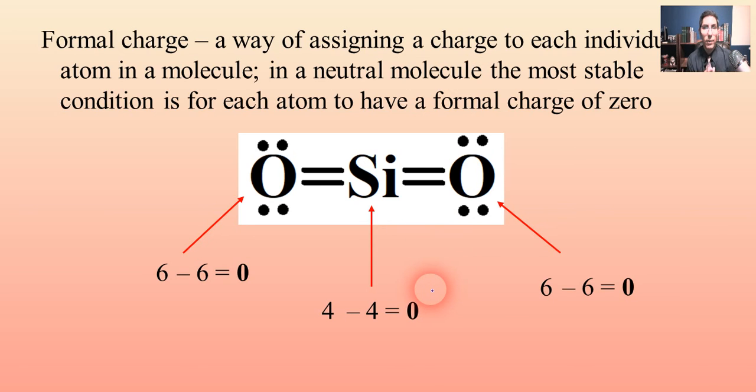If everything is obeying the octet rule and everything has a formal charge of 0, then this is great. That's what you want. You want everything to have a formal charge of 0. That means that this is most likely the most stable Lewis electron dot diagram for that molecule. That's probably how the molecule is going to exist.